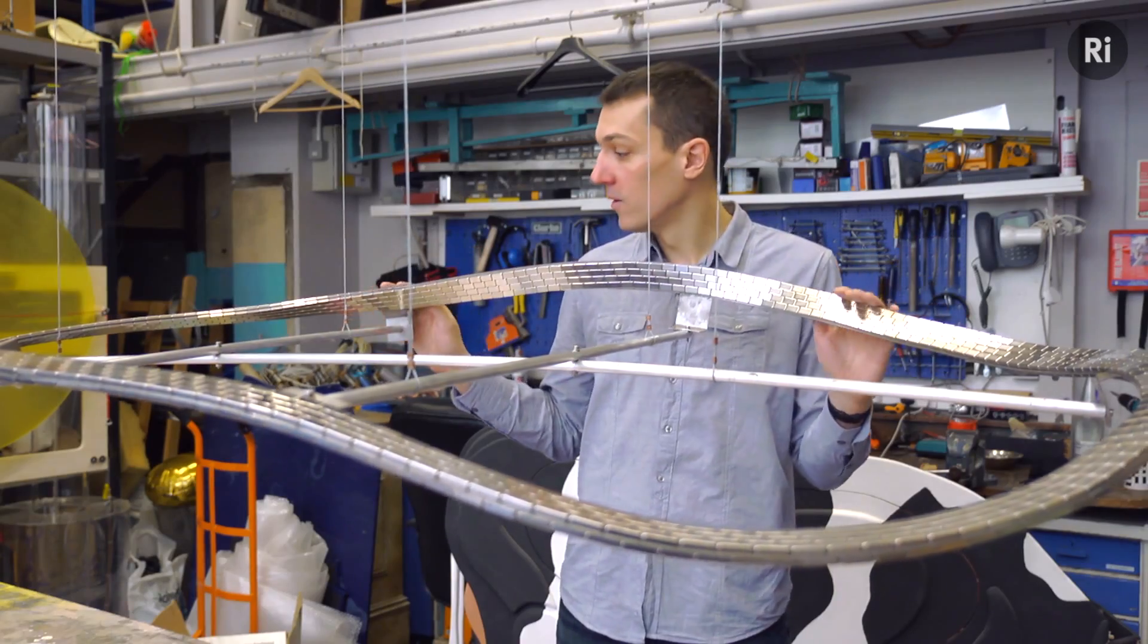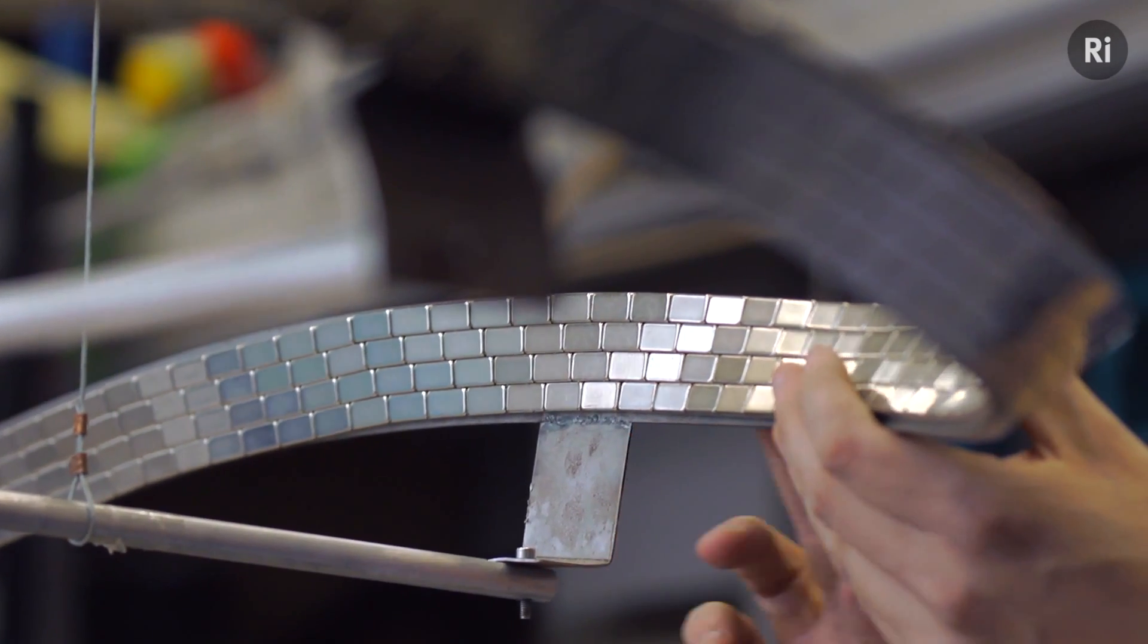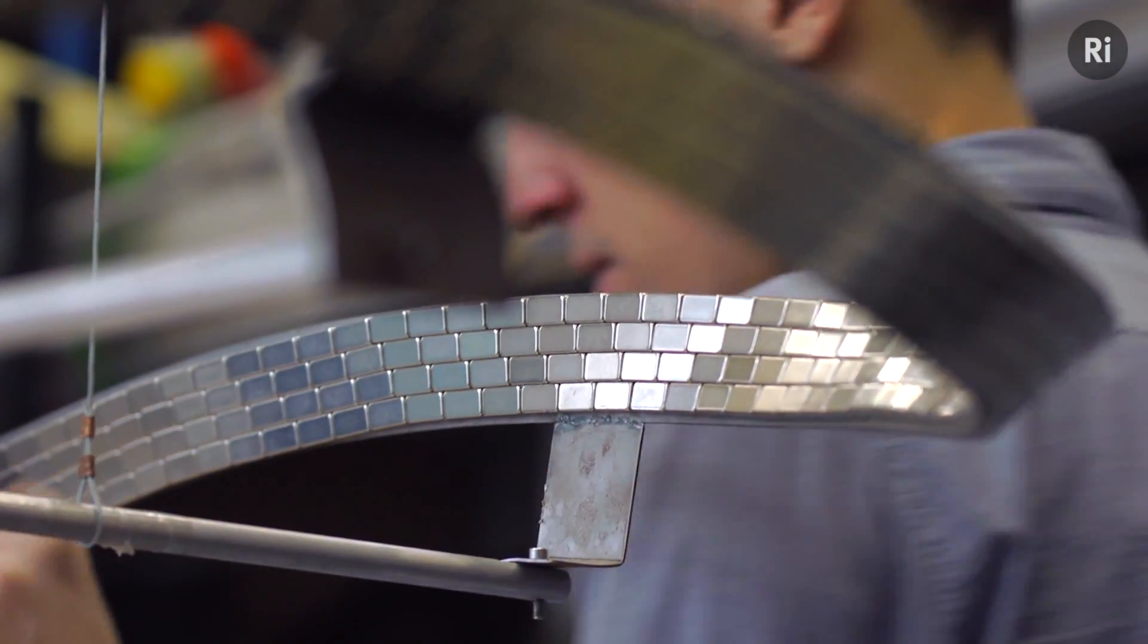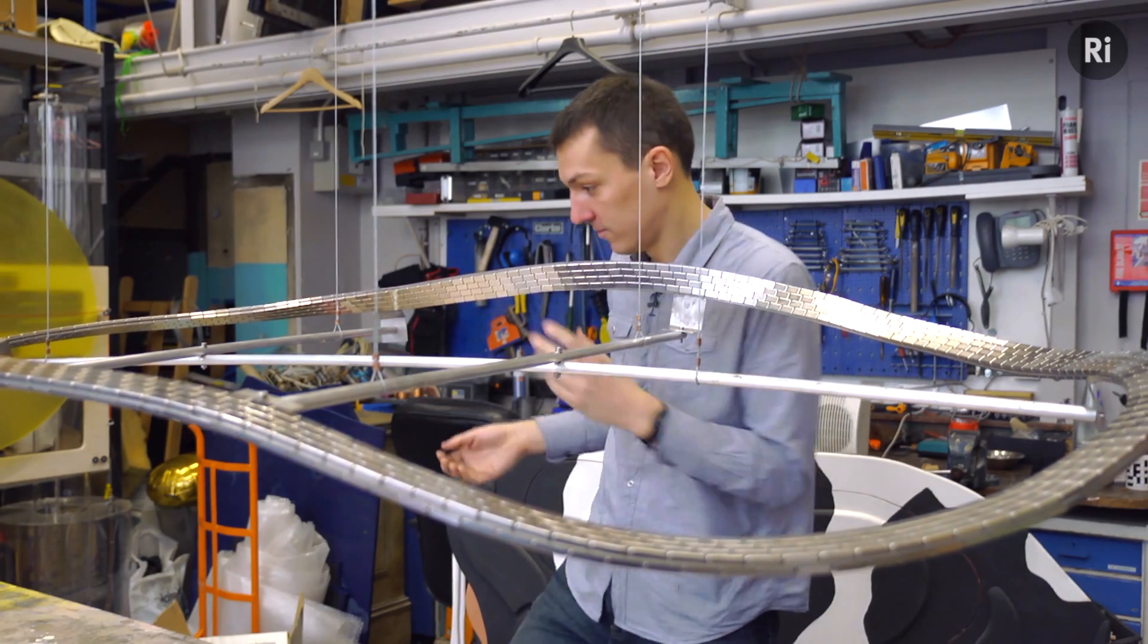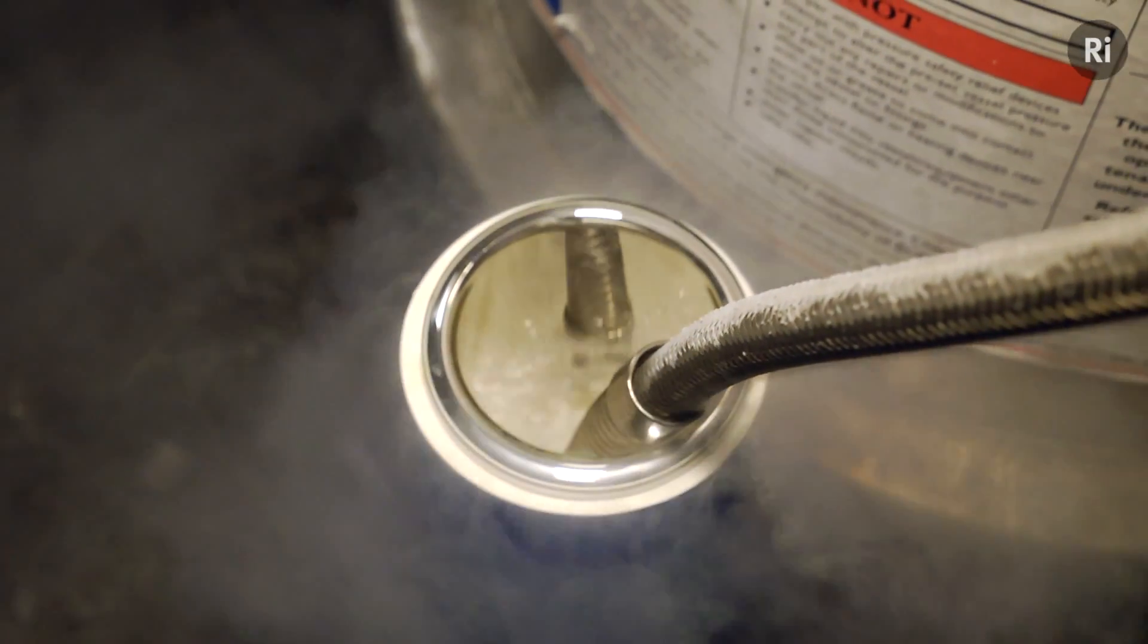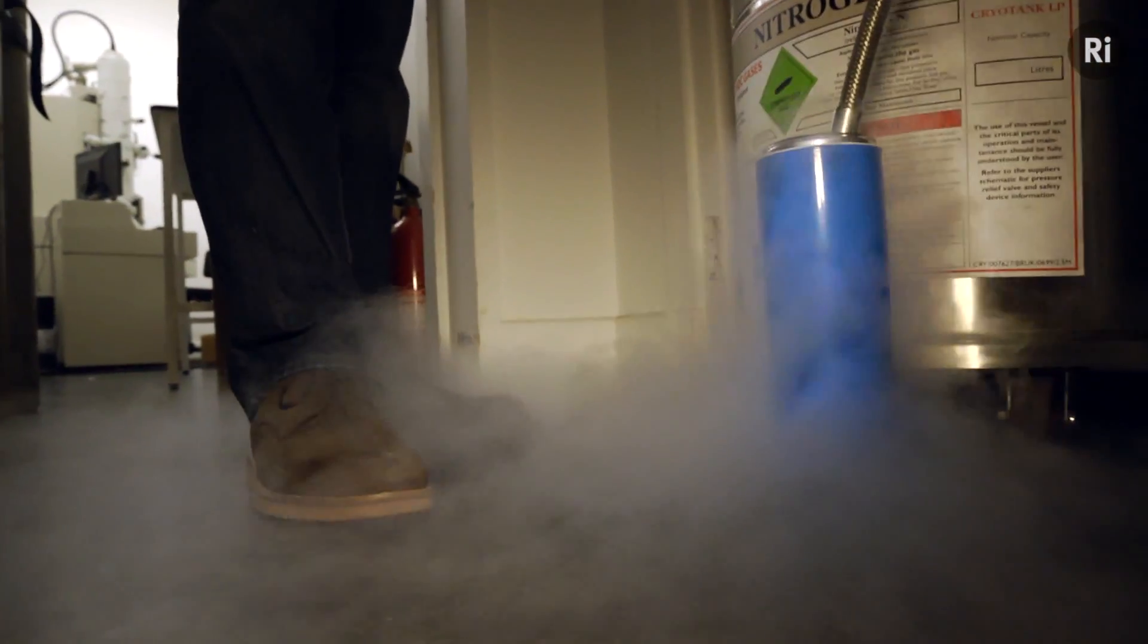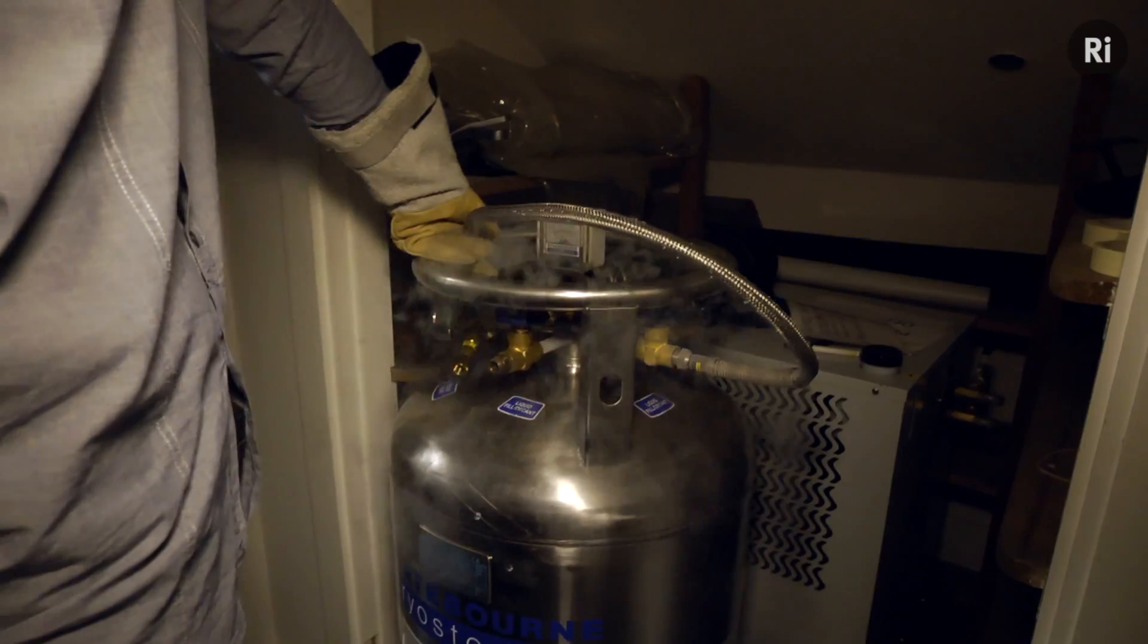So we have one suspended super-strong neodymium magnetic Möbius strip track. All we need now is some liquid nitrogen. We're down in one of the labs at the RI and this is where the liquid nitrogen is stored. That'll probably do.